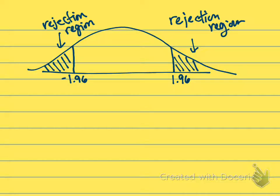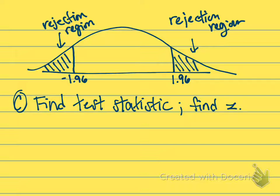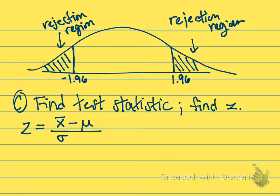The next part, part C, asks us to find the test statistic for our sample. Since our standard deviation is known, we're going to find our Z value and then test it against our decision rule. The formula we use to find our Z: we take our sample mean, subtract from that the population mean that we're testing, and then divide by the standard deviation from our population divided by the square root of our sample size.